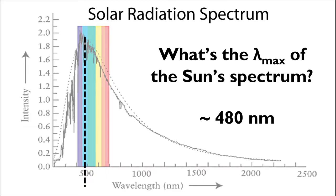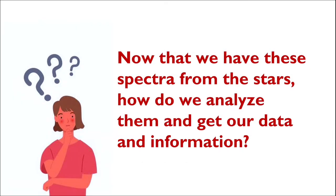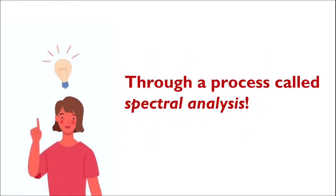Now that we have the spectra from all of these various stars, some of which have some pretty noticeable features, how do we analyze them and get our data and information? We use a process called spectral analysis. But how is this done?